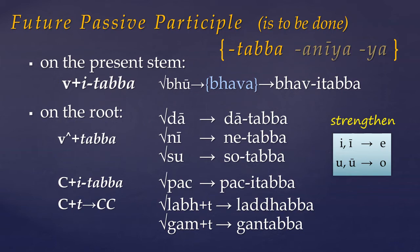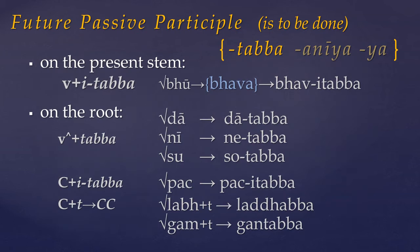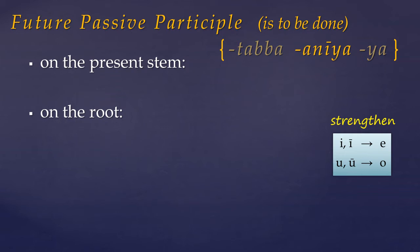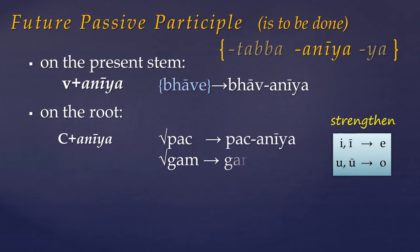Or if added directly, the initial t of tabba assimilates with the final consonant. The assimilation usually results in a double t, g, or d. I should add that this is a bit simplified, as there are quite a few peculiarities due to Sanskrit. Now tabba is the most common affix, but aniya is also often found. Aniya is only applied to verbal roots, but the affixes are also applied to the causative verbal base, which can appear like a present stem. Sometimes when added to roots ending in an r, the n of aniya becomes retroflex. And some roots also undergo vowel strengthening.